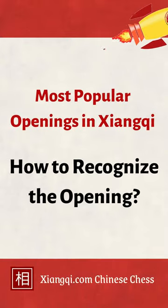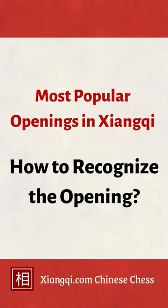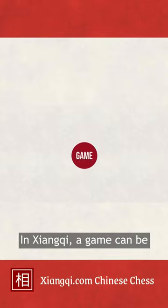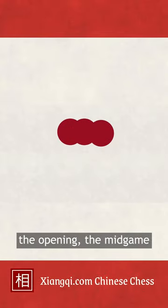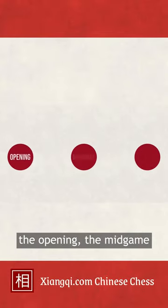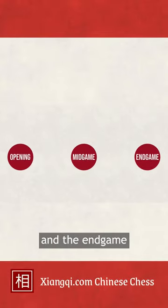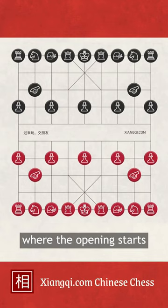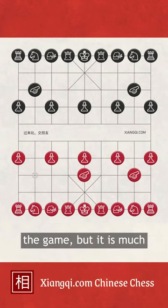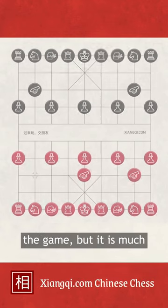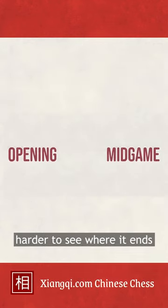Let's learn how to recognize the opening in Xiangqi. A game can be divided into three stages: the opening, the mid-game, and the end-game. It's pretty easy to see where the opening starts — it's the first move of the game. But it's much harder to see where it ends.